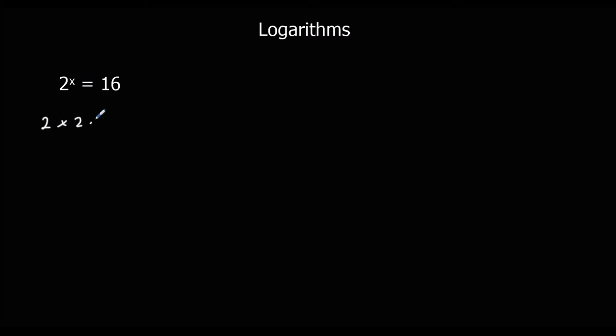So it's 2 to the power of something equals 16. Well, we know that 2 times 2 times 2 times 2 is equal to 16, so 2 to the power of 4 equals 16, so the answer is 4. But logarithms are going to be really useful when it's a decimal answer, when it's not a whole number answer, or a really big answer.